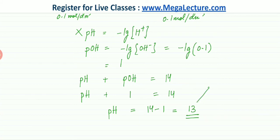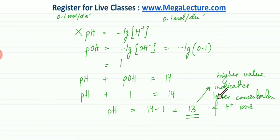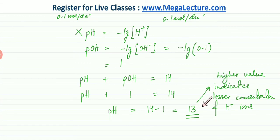A pH of 13 indicates a very low concentration of H⁺ ions. In a basic condition, the concentration of H⁺ is very low. A very high pH means [H⁺] is extremely low — pH 13 means [H⁺] = 1 × 10⁻¹³, which is extremely low.